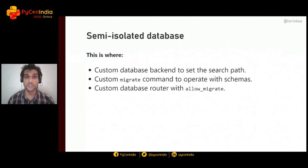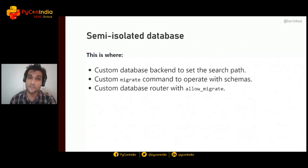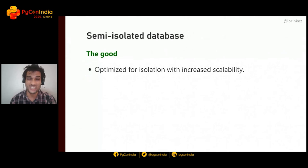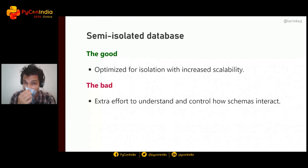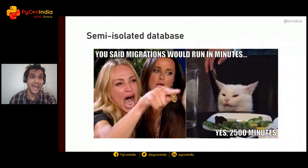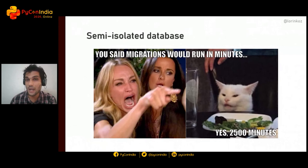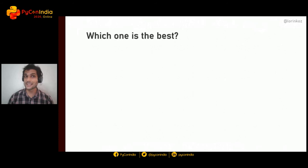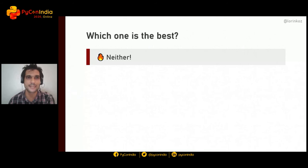You also need a custom database router with the `allow_migrate` hook so that, in tandem with the migrate command, Django can determine whether a specific model should be migrated in a specific schema. The semi-isolated approach is optimized for isolation while also having increased scalability since you're reusing a single database. The downside: it takes extra effort to understand how schemas interact, and migrations take a lot of time because you're iterating through all schemas for every migration run.